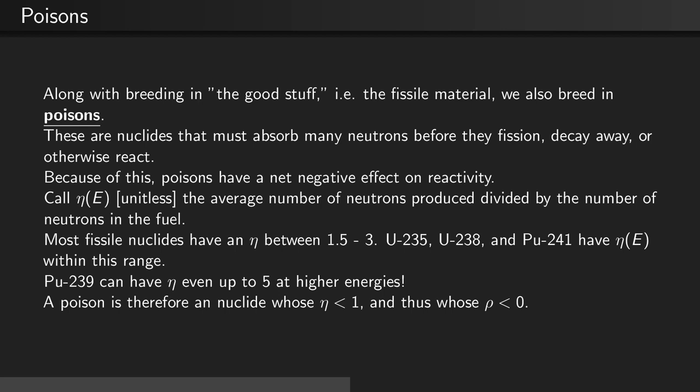A poison is therefore a nuclide whose eta is less than 1, and therefore whose reactivity is less than 0.